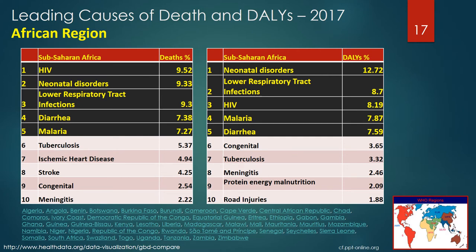For the African region, the leading causes of death were HIV, neonatal disorders, lower respiratory tract infections, diarrhea, and malaria. The five leading health impacts via DALYs in 2017 were neonatal disorders, lower respiratory tract infections, HIV, malaria, and diarrhea. Four of the five causes on both of these lists are infectious or communicable diseases. Notice also that tuberculosis is in sixth position on the causes of death and seventh position on the DALYs table.